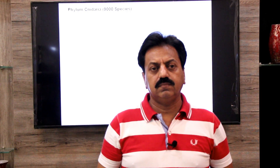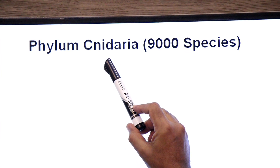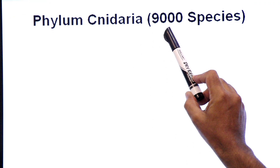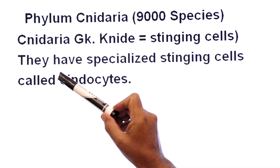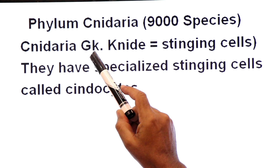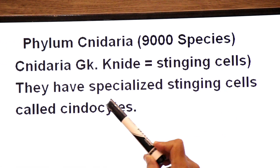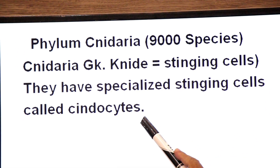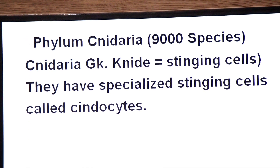Hello dear students, welcome back. Today we will learn about phylum Cnidaria. According to the Sindh textbook board Jamshoro, this phylum includes nine thousand species. The word 'cnidaria' has Greek origin — 'cnid' means stinging cells. The phylum is named Cnidaria because they have specialized stinging cells called cnidocytes.